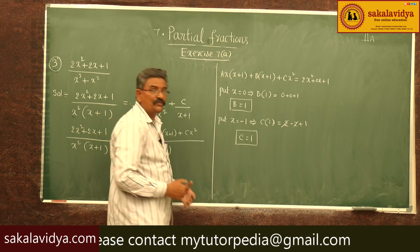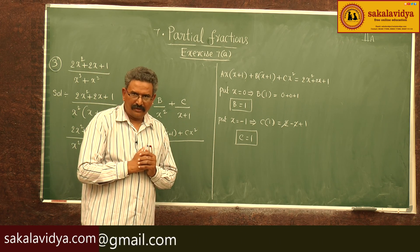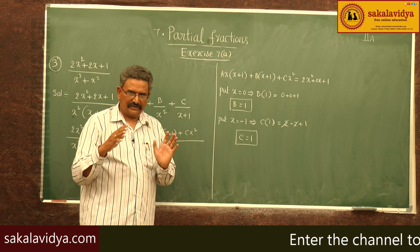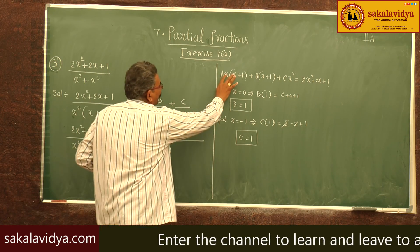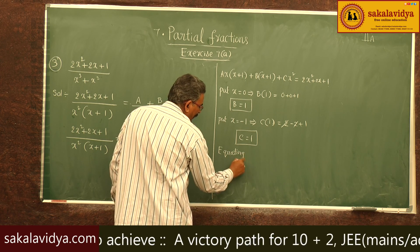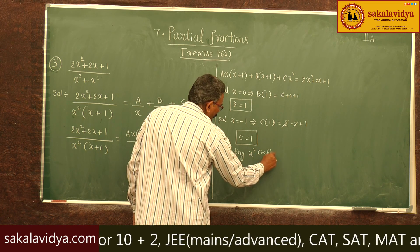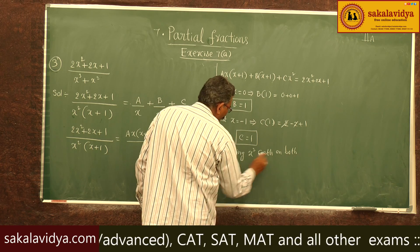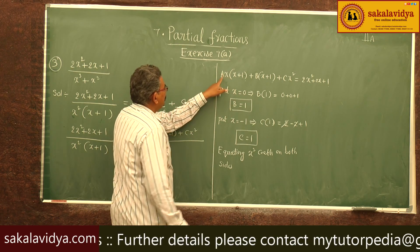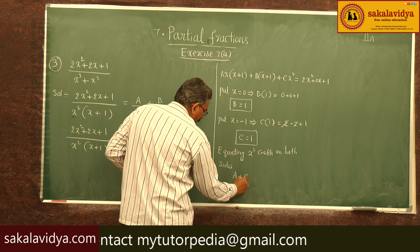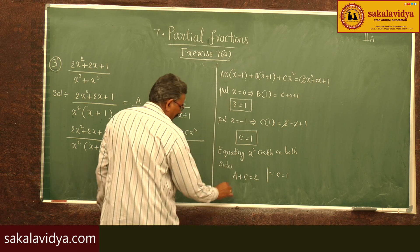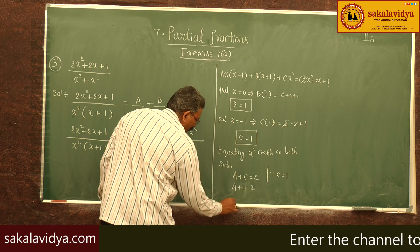But how do we find A? There is no other way — we have to equate the coefficients. Equating the x² coefficients on both sides: the left side gives A + C, and the right-hand side gives 2. Since C = 1, we get A + 1 = 2, so A = 1.